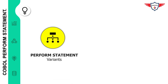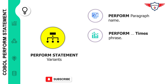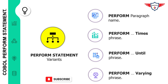There are four different formats of the COBOL perform statement. The first is PERFORM followed by a paragraph name. The second is PERFORM with the TIMES phrase. The third is PERFORM with the UNTIL phrase. The fourth is PERFORM with the VARYING phrase.